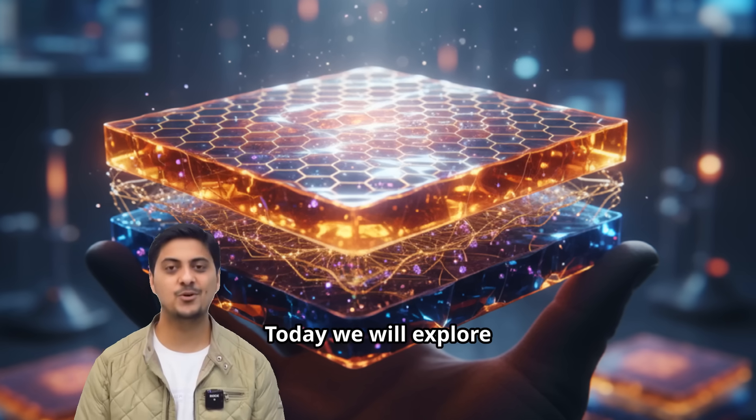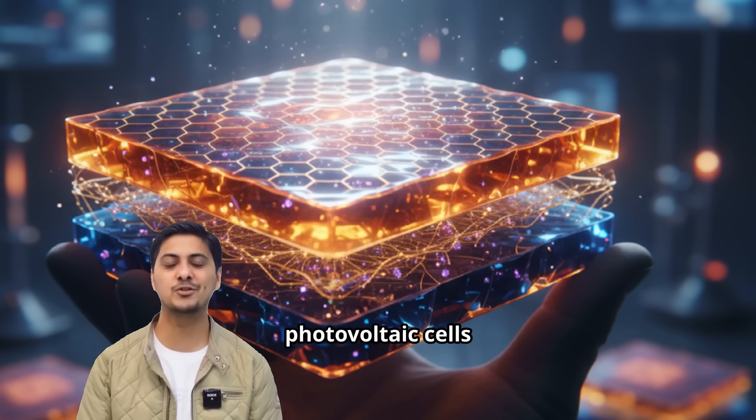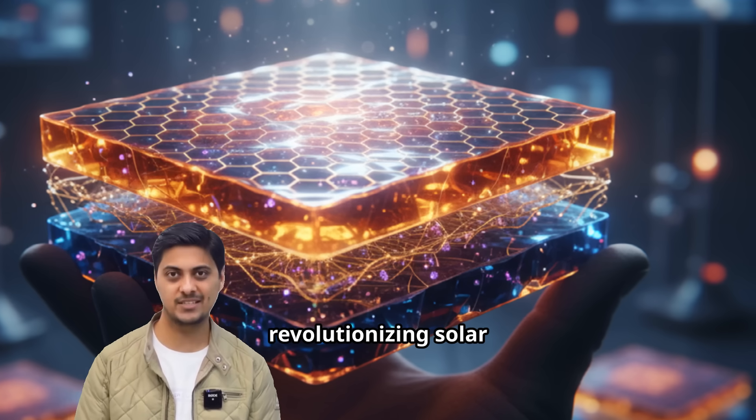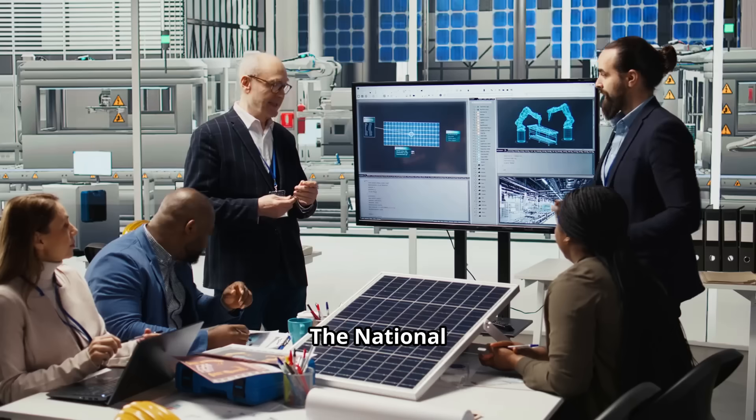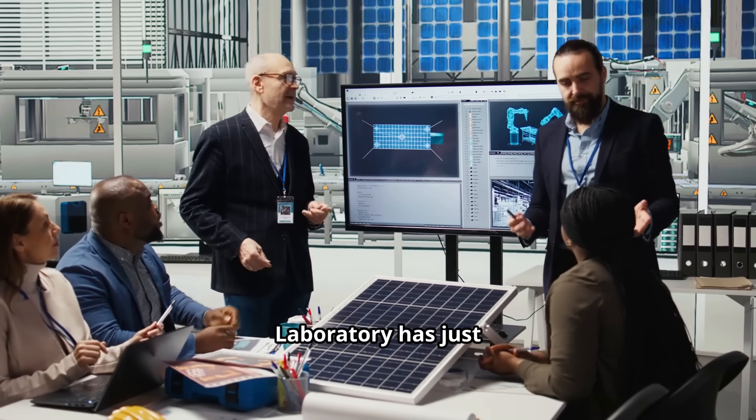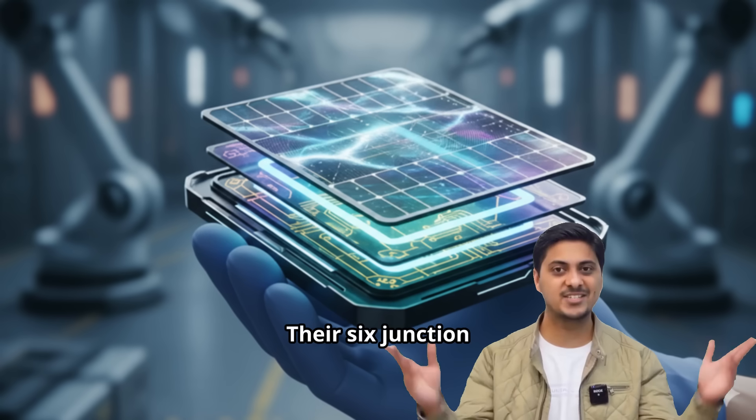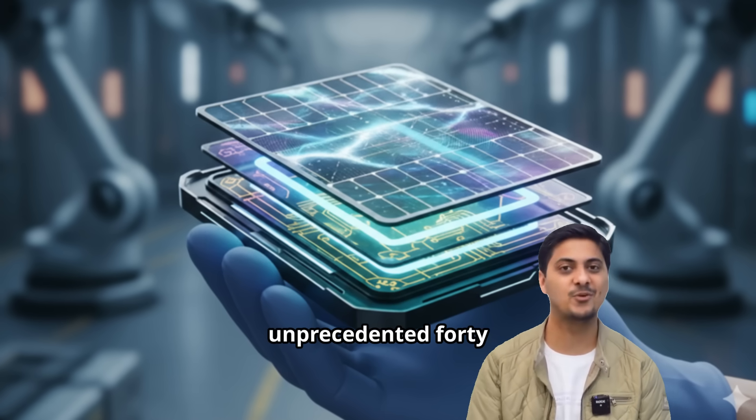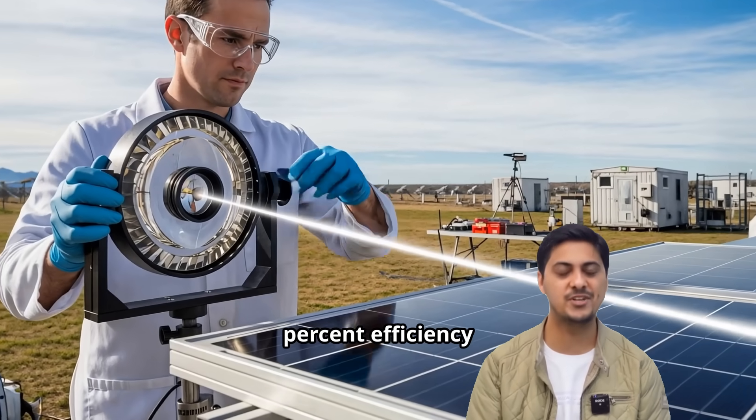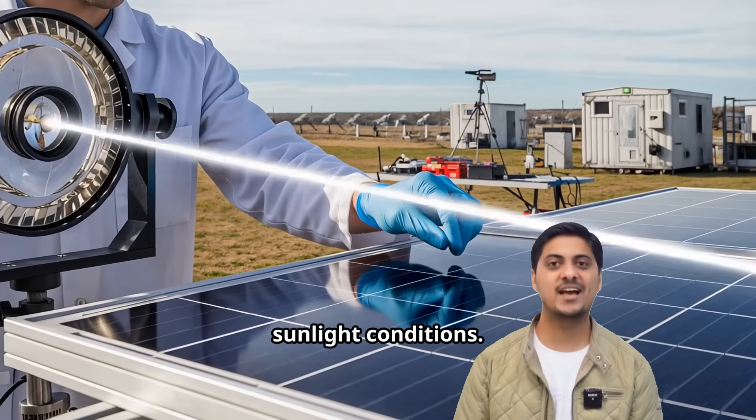Today, we will explore the incredible world of multi-junction concentrated photovoltaic cells that are revolutionizing solar technology completely. The National Renewable Energy Laboratory has just announced the most groundbreaking achievement. Their six-junction solar cell has achieved an unprecedented 47.1% efficiency under concentrated sunlight conditions.